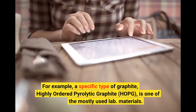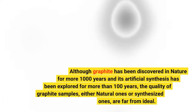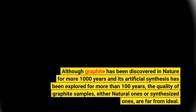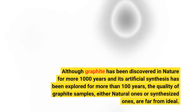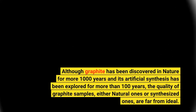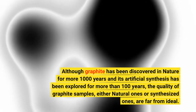For example, a specific type of graphite, highly ordered pyrolytic graphite, HOPG, is one of the mostly used lab materials. Although graphite has been discovered in nature for more than 1,000 years and its artificial synthesis has been explored for more than 100 years, the quality of graphite samples, either natural ones or synthesized ones, are far from ideal.